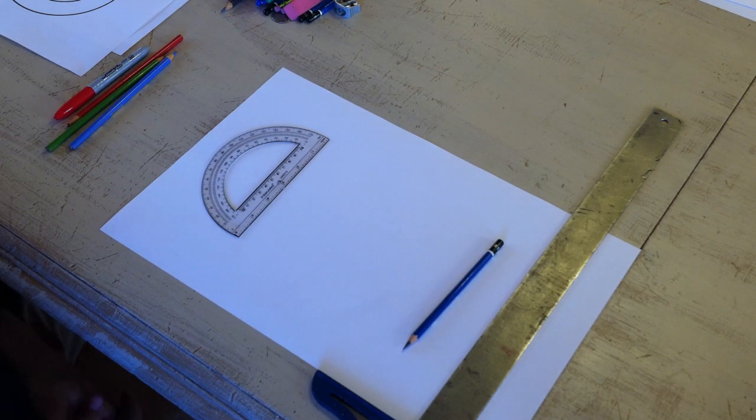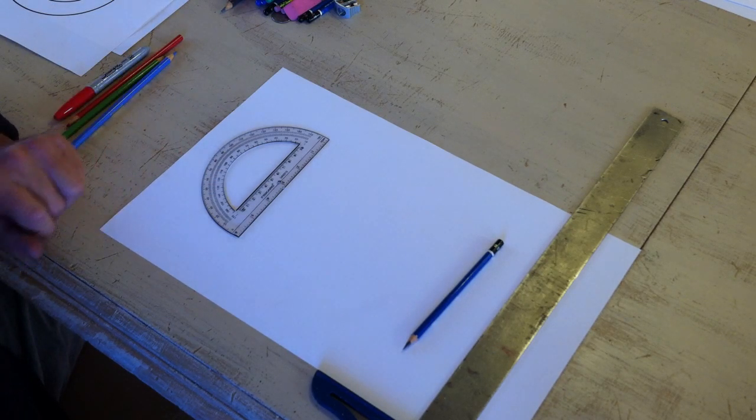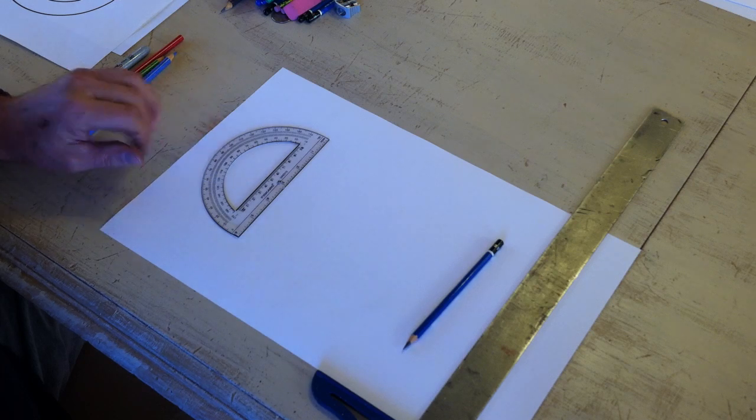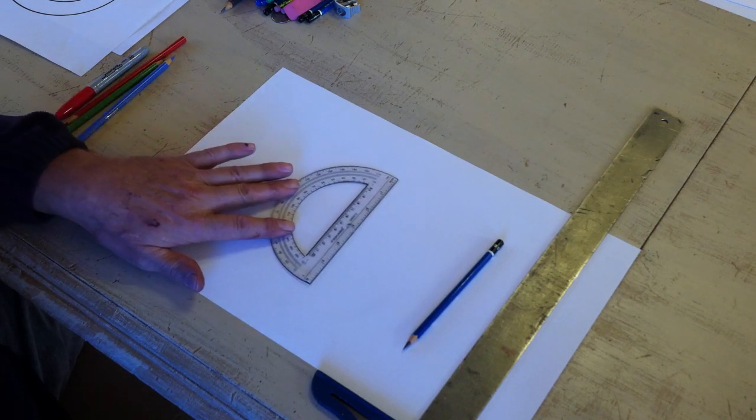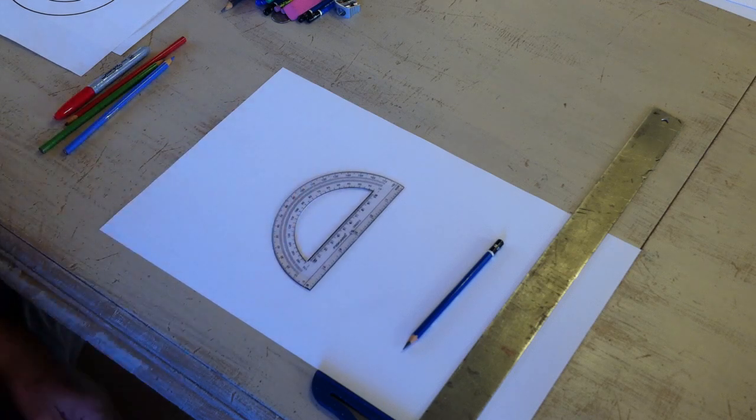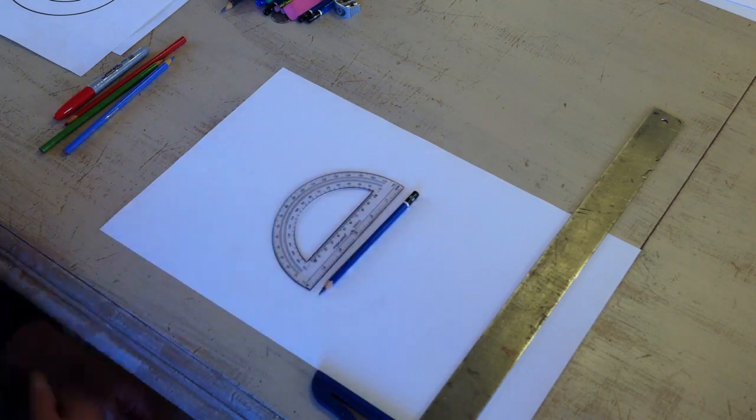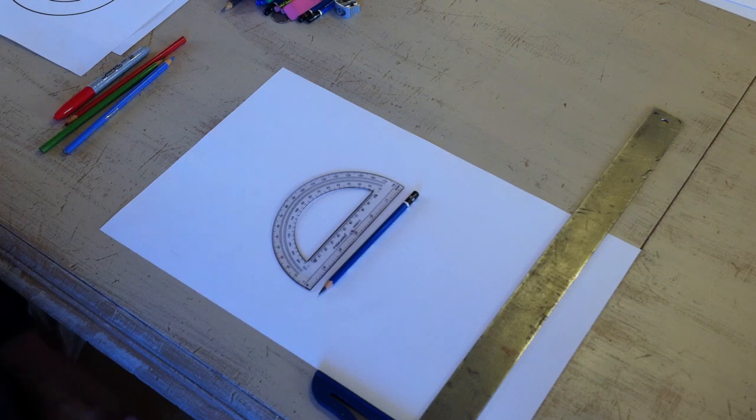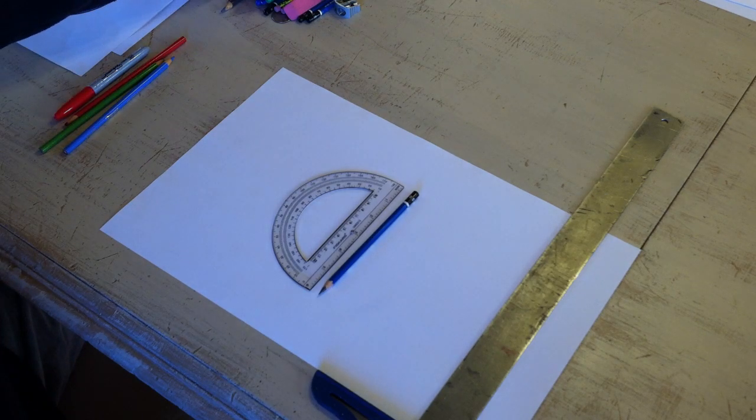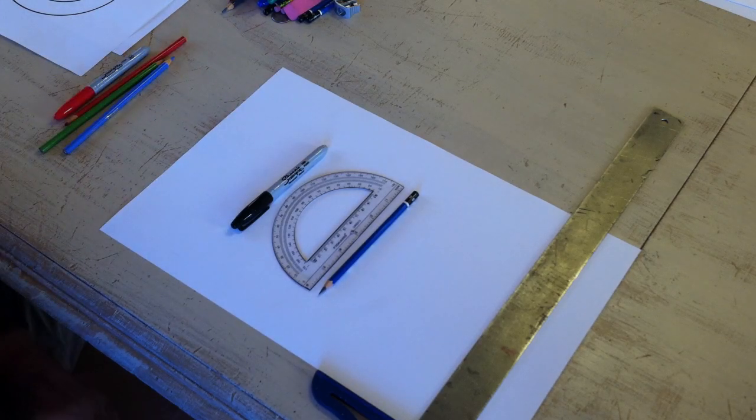For this assignment you're going to need a 12 by 18 piece of paper, preferably white. You're going to need a protractor, a pencil, preferably a drawing pencil, and either colored pencils. You're definitely going to need a black marker and you may want to use markers instead of colored pencils for this assignment.